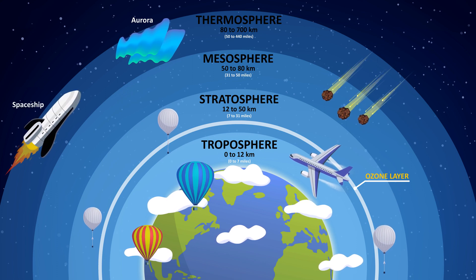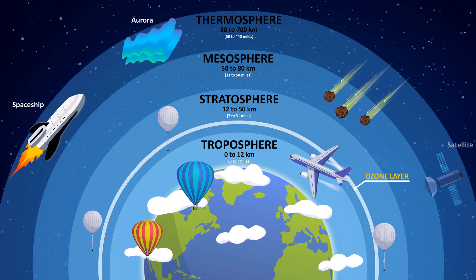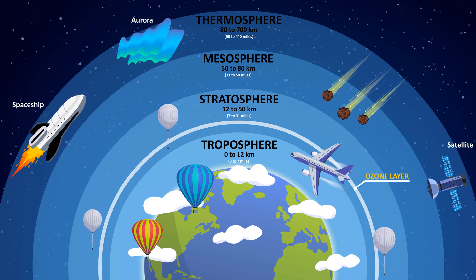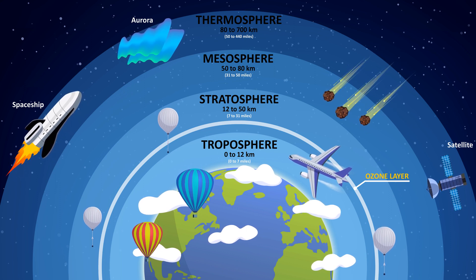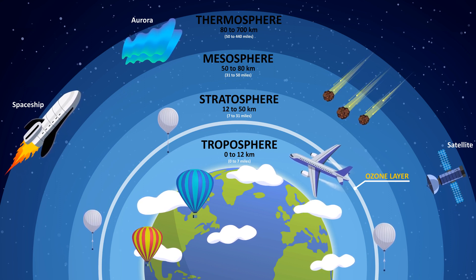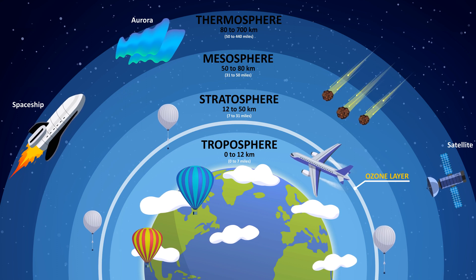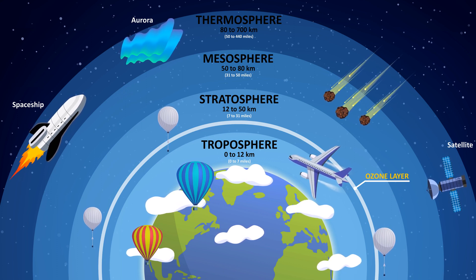Thermosphere: the thermosphere rises several hundred kilometers above the Earth's surface. Temperature is very much affected by the sun here — temperature increases with height and can rise to as high as 2000 degrees Celsius.